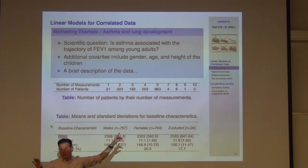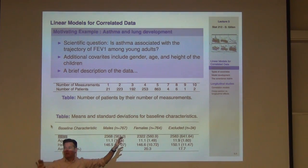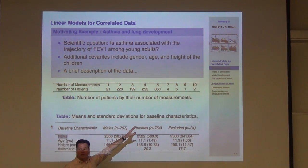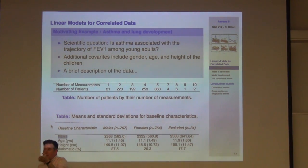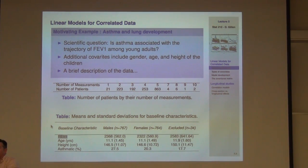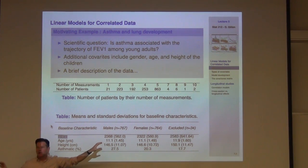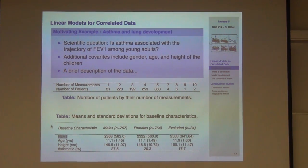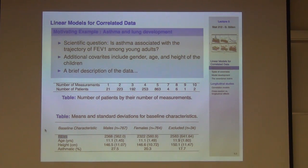By the way, the study design was that kids were supposed to be measured annually. The child with 10 measurements came in at age 8 and was measured all the way until age 18. If I took the mean over all observations, I'd be heavily weighting the kids who came in younger. The same issue is obviously true with age and height.